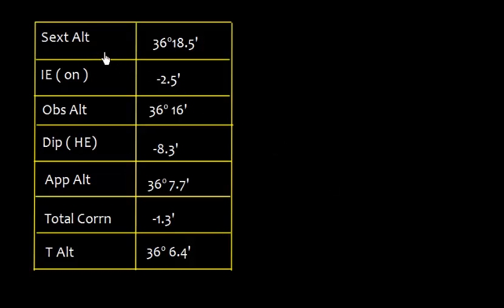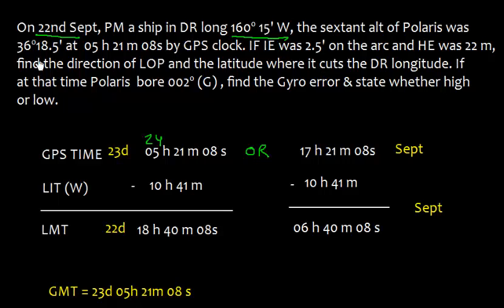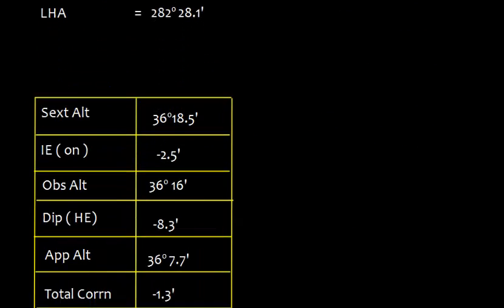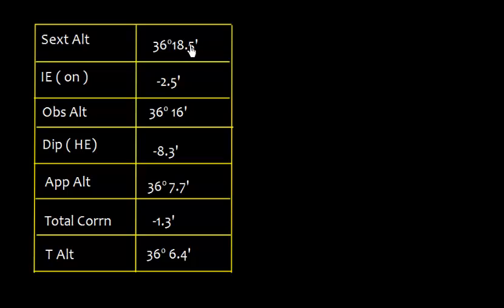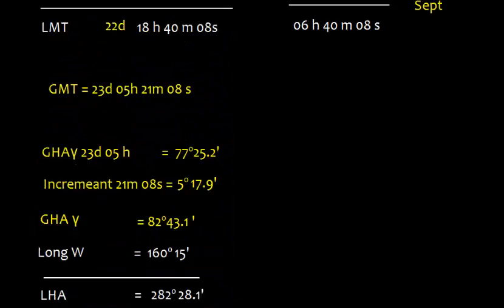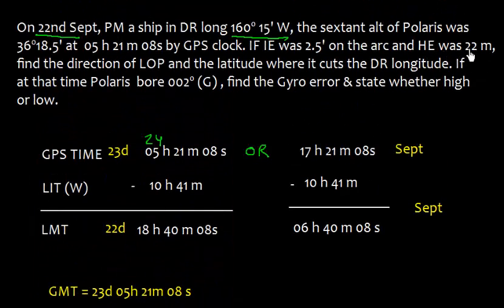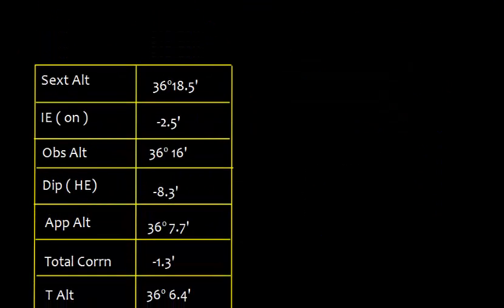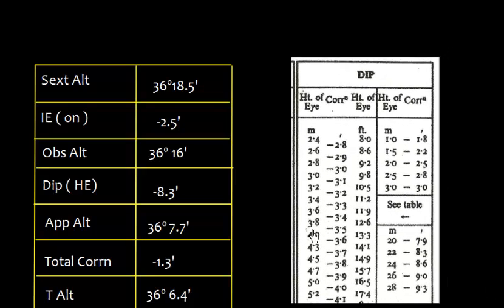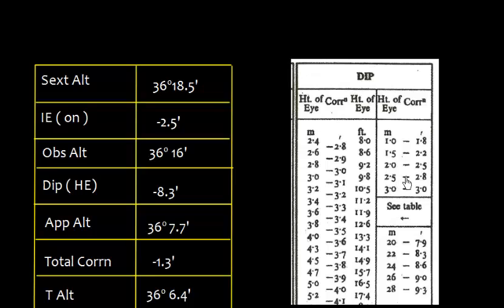The next step is to find true altitude. Sextant altitude is given as 36 degrees 18.5 minutes. Index error is 2.5 on the arc, so we get 36 degrees 16 minutes. For dip, height of eye is 22 meters. Looking at the table, 22 meters gives minus 8.3, and dip correction is always subtracted.